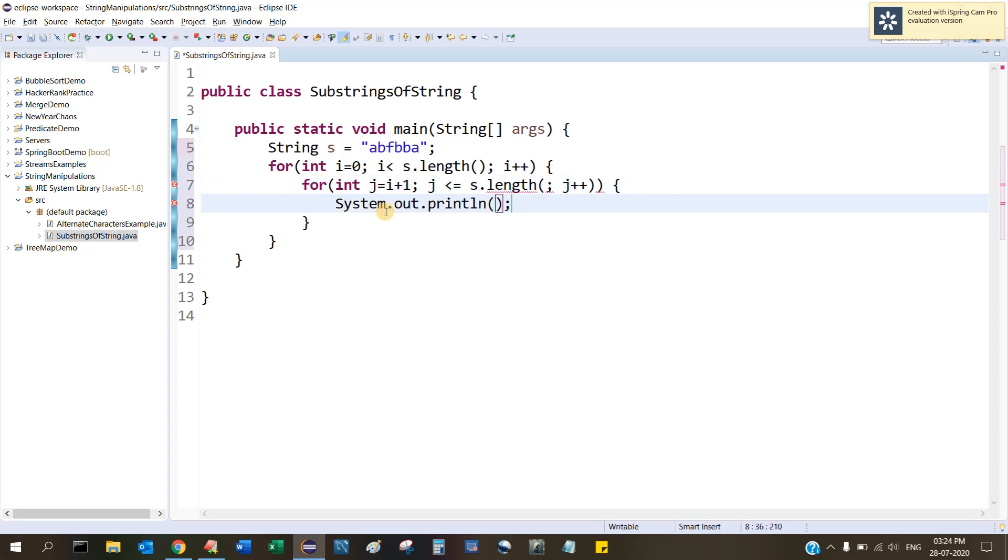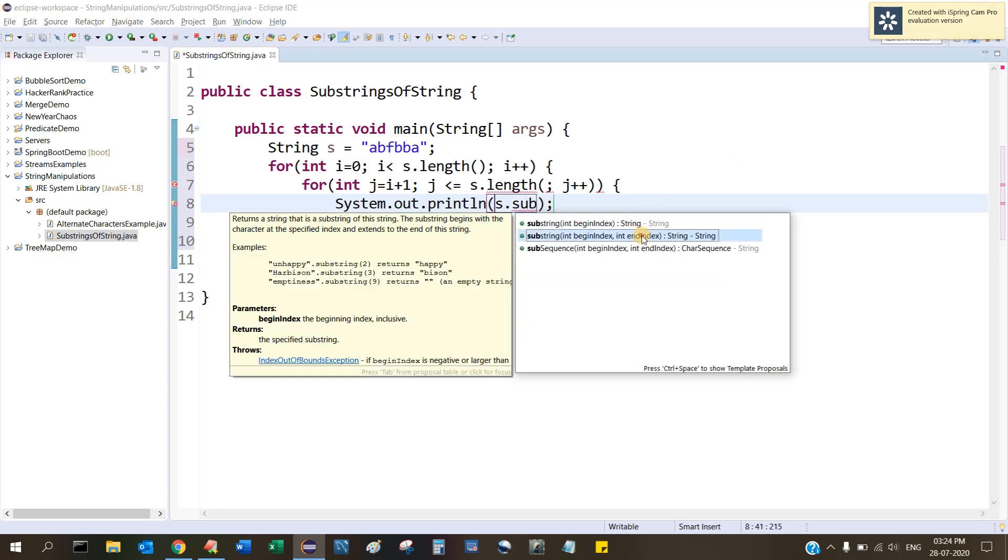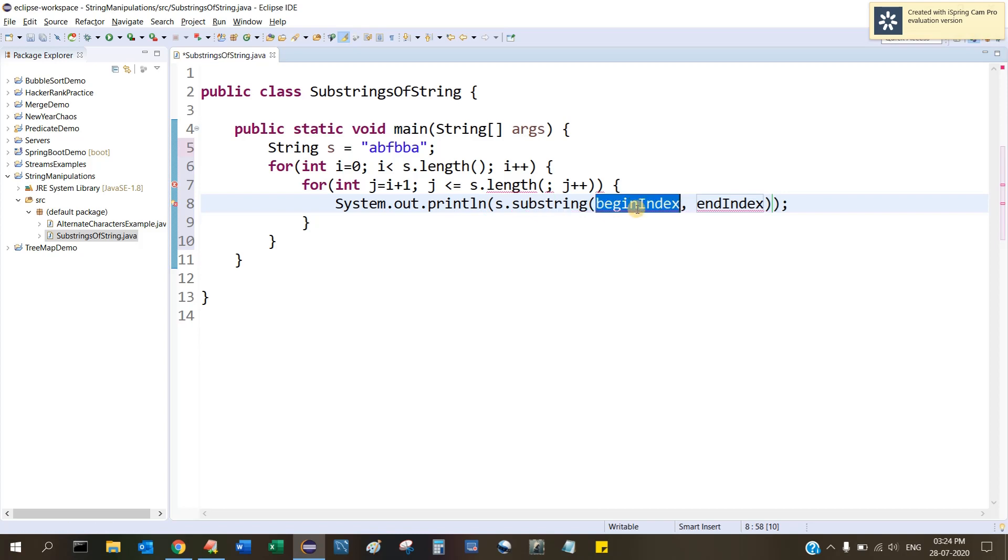And I just have to print the substring. How to print? s.substring of begin index and end index - begin index is i and end index is j. Let's save this. Okay, I am getting an error. Let me save this and I am getting one more error here. Okay, fine. Let me run this now.